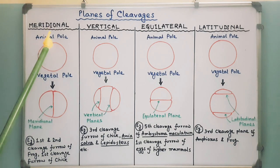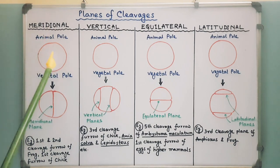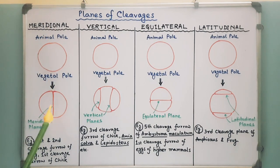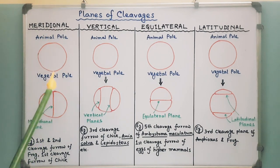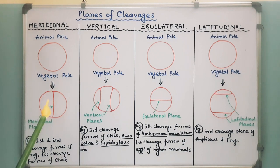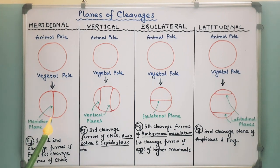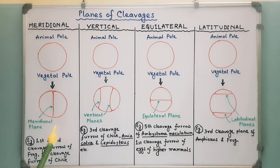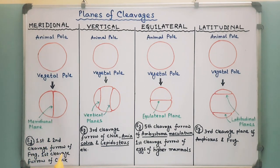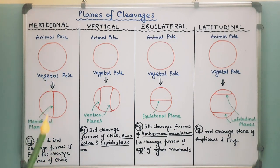Meridional plane: here the cleavage furrow passes through the center of the animal-vegetal axis and bisects both poles of the egg. For example, the first and second cleavage furrows of frog, and the first cleavage furrow of chick embryo, occur in the meridional plane.